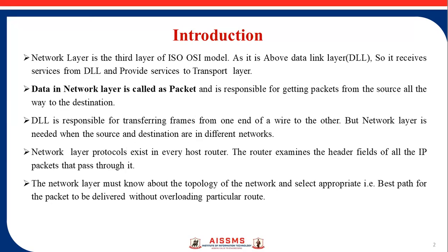Data in the network layer is called a packet. Whatever data comes into the network layer, we call it a packet, and that packet is responsible for getting packets from the source all the way to the destination. The data link layer is responsible for transferring frames from one end of a wire to the other, but the network layer is responsible for routing packets from source to destination across different networks.